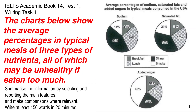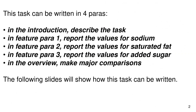Today we are going to be discussing the Cambridge IELTS Academic Book 14 Test 1, Writing Task 1. The charts below show the average percentage in typical meals of three types of nutrients, all of which may be unhealthy if eaten too much. This task can be written in four paragraphs: the introduction, feature para one for sodium, feature para two for saturated fat, feature para three for added sugar, and an overview for major comparisons.